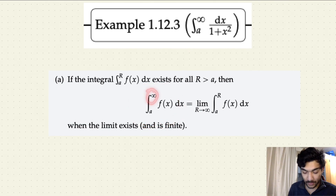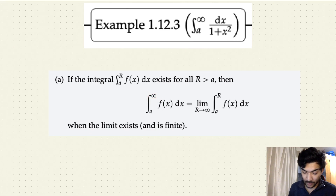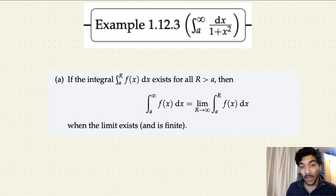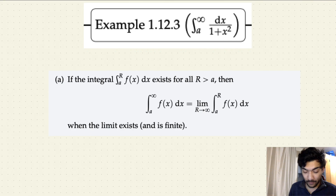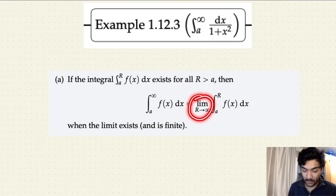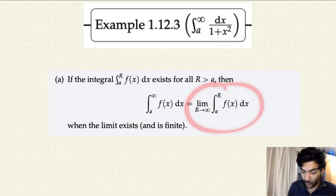To summarize: whenever you're calculating a definite integral where one limit is infinity — for example, when your upper limit is infinity — first check that you don't have any other discontinuity except at infinity, meaning f(x) should be defined for all real values in the interval. Then calculate the integral from a to capital R, and take the limit as capital R approaches infinity. Whatever value you get is your final answer.